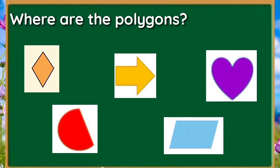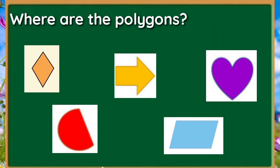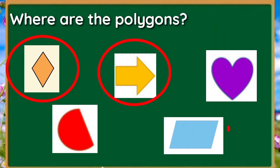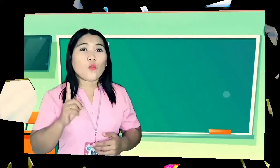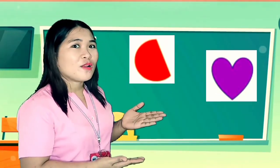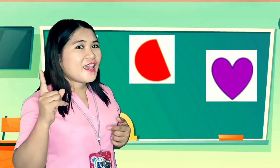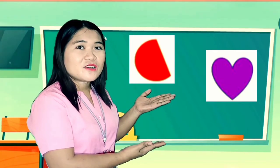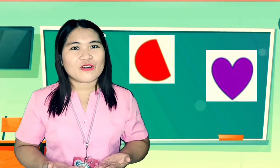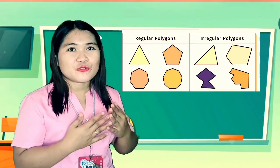Let's have an engagement activity. In these figures, where are the polygons? Can you encircle those polygons? Great job! Why are these objects not called polygons? Because these objects are formed by curved lines. Polygons are made of straight lines. You did a great job!